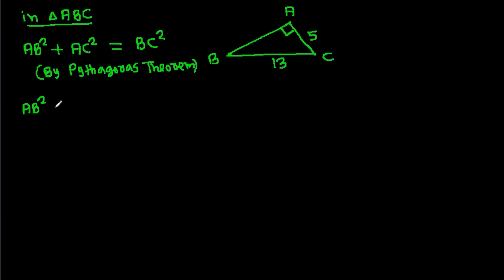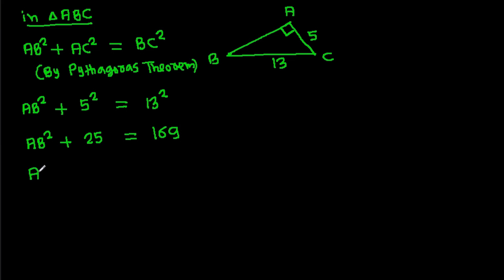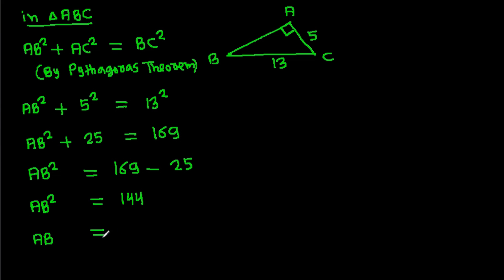AB squared plus AC squared, that is 5 squared, equals BC squared, that is 13 squared. So AB squared plus 25 equals 169. Therefore AB squared equals 169 minus 25, which is 144. So AB equals the square root of 144, that is 12.